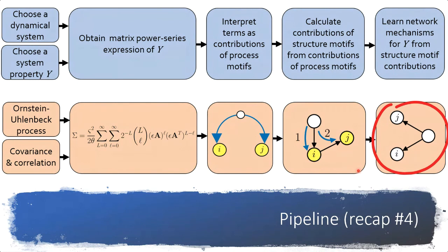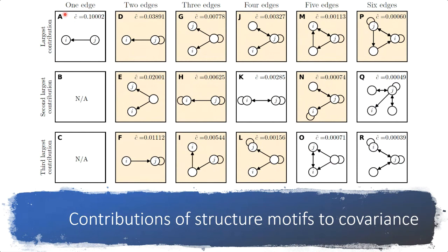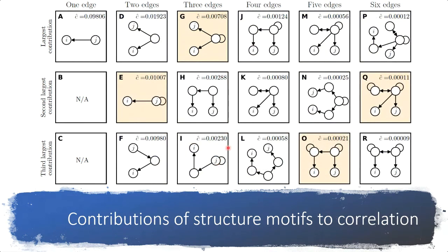Using specific contributions, we can write covariance and correlation as weighted sums of structure motif counts — analogous to what we did for process motifs. The structure motifs with the largest contributions to covariance, having between one and six edges, frequently include bi-directional edges and self-edges at nodes i or j. Every self-edge essentially doubles the number of covariance process motifs that can occur; self-edges and bi-directional edges represent short loops along which a signal can amplify itself at node i and node j.